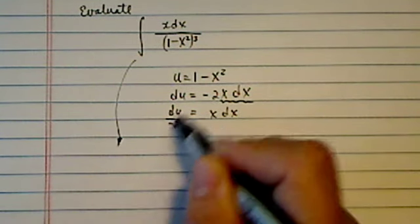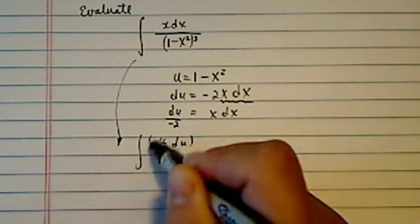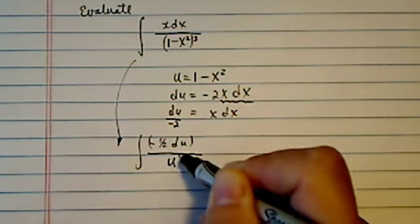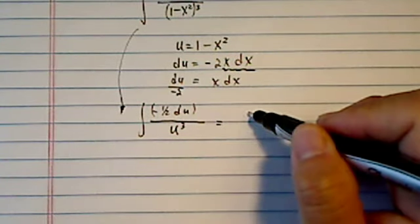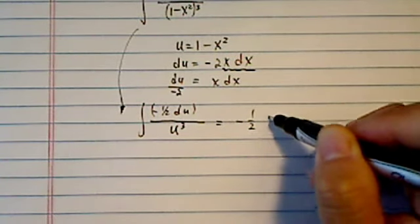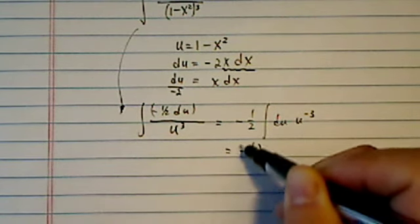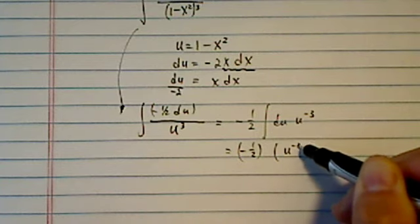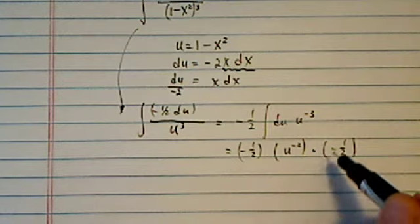It's going to slip. So du is minus half du here on top, divided by u to the third. Let's clean up a little bit. Again, minus half du, u to the minus third. Using power rule, we have u to the minus two times minus half.